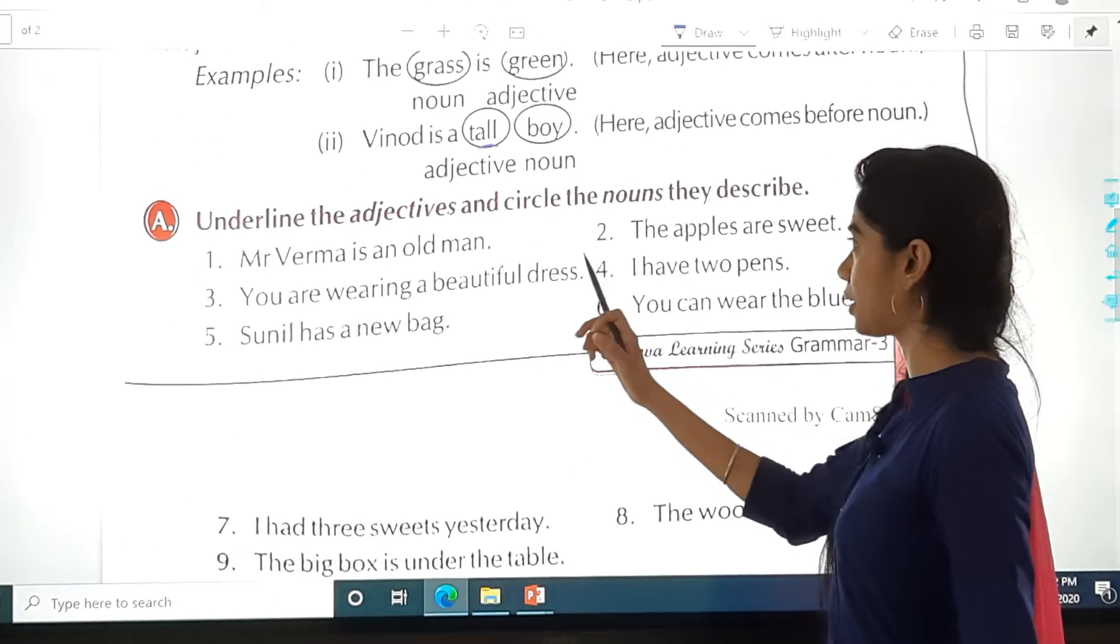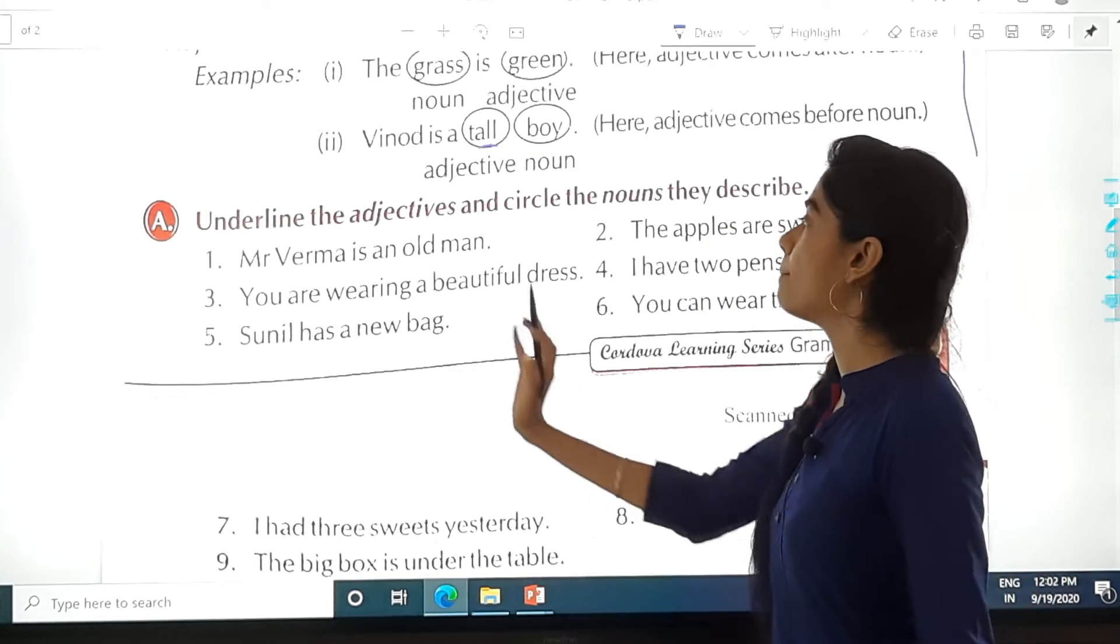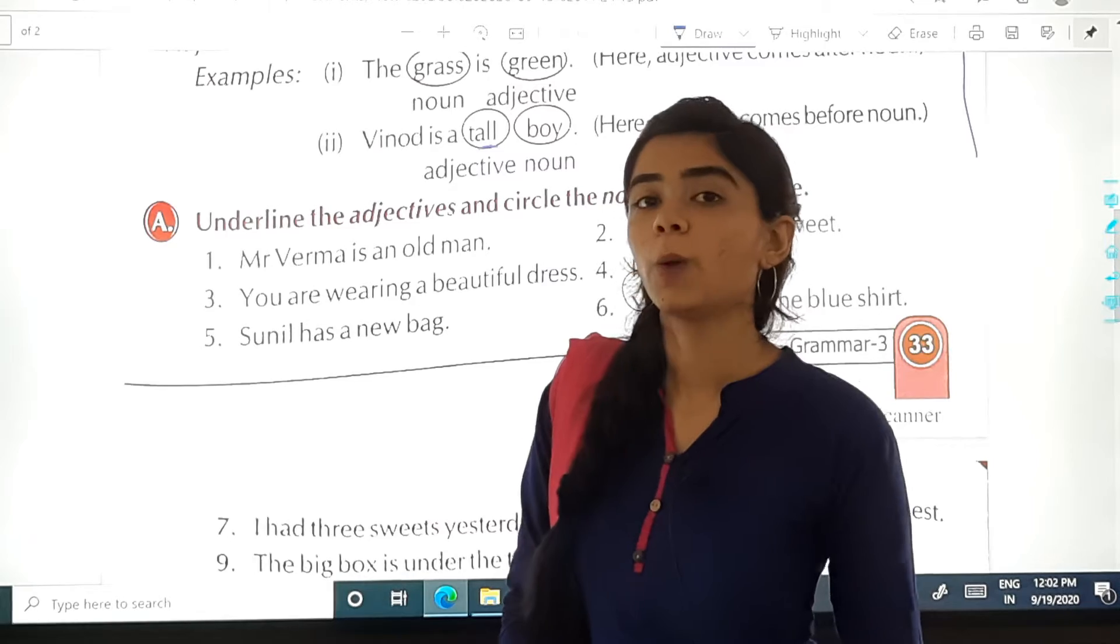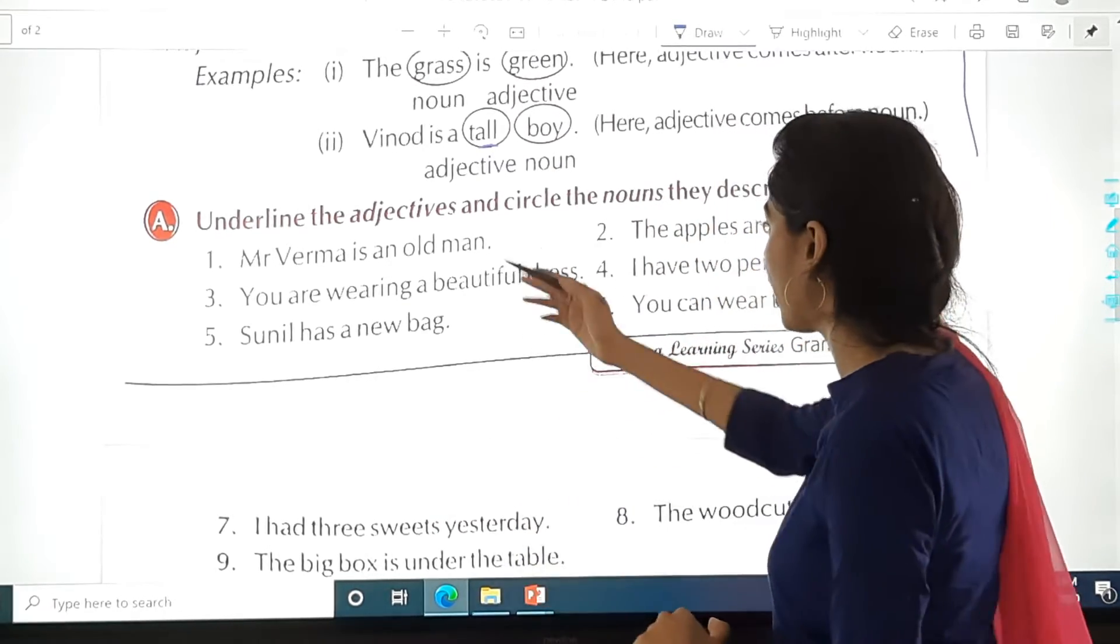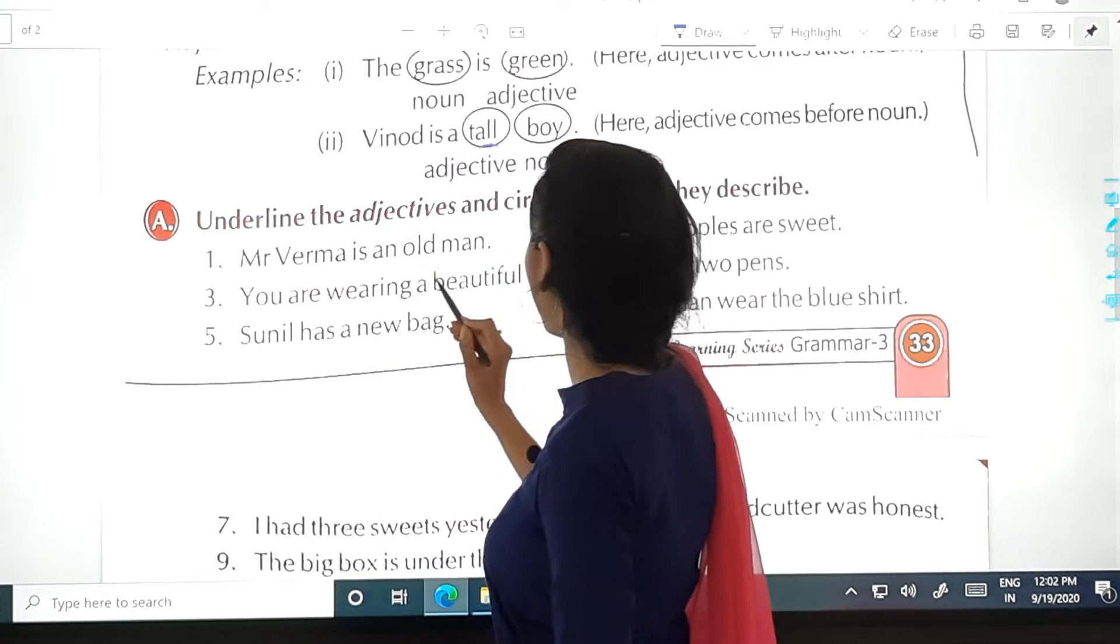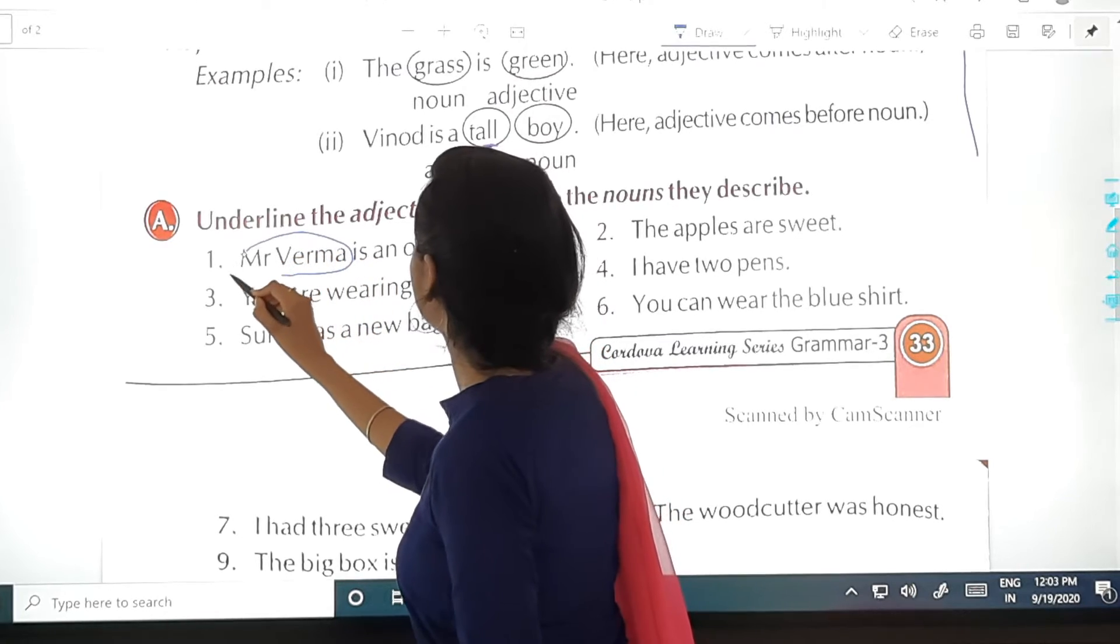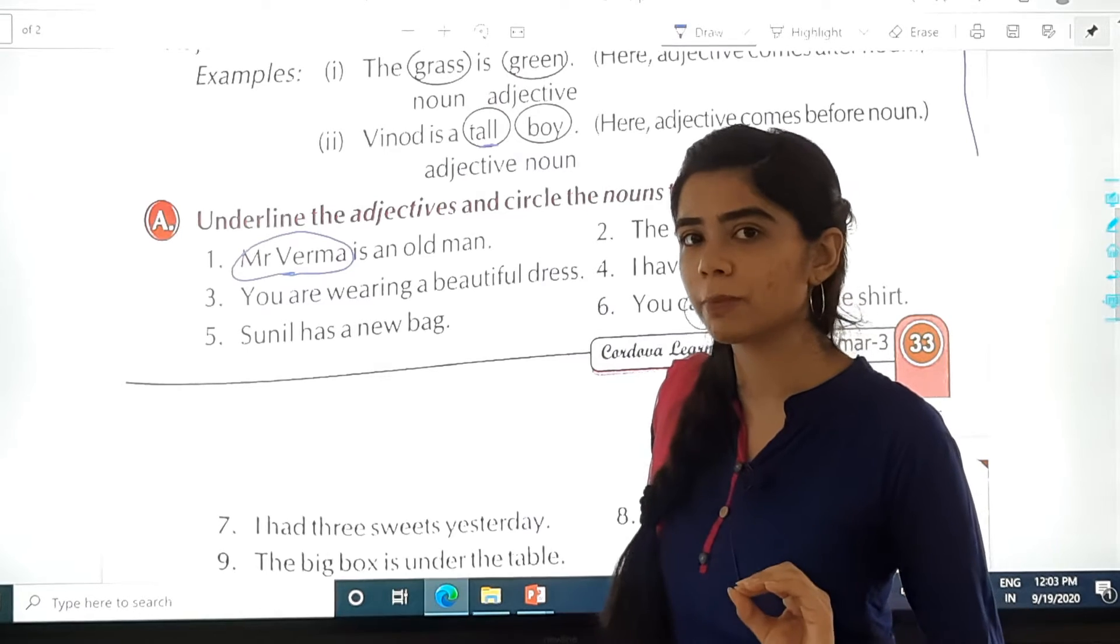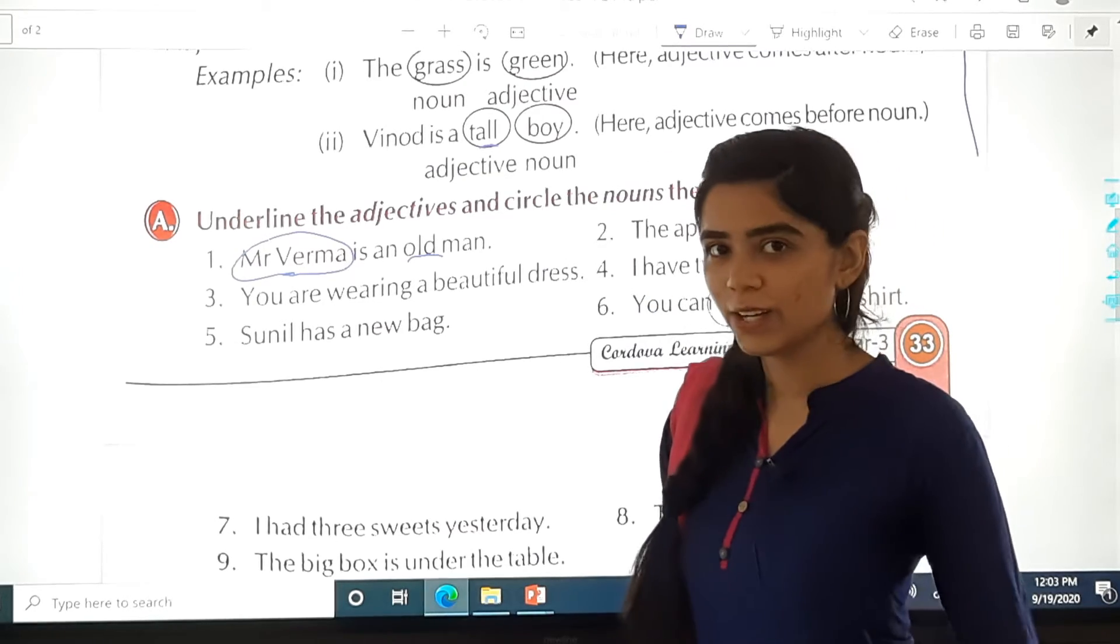Underline the adjectives and circle the nouns they describe. Mr. Varma is an old man. Now tell me which is the noun and which is the adjective. Look at the sentence carefully. So Mr. Varma is our noun. So we will circle him. And the quality that describes Mr. Varma is old. So we will underline that.